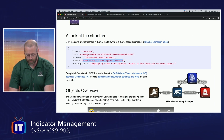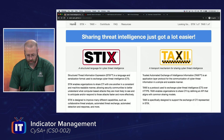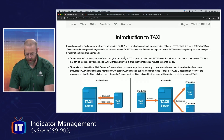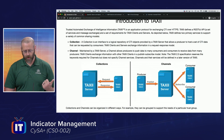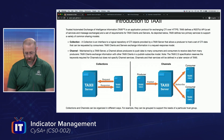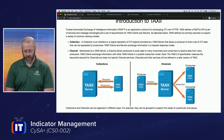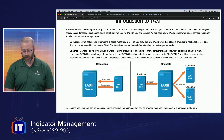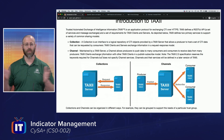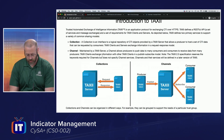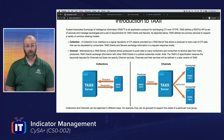Let's go back and hit the TAXII section. A collection is an interface to a logical repository of CTI objects provided by a TAXII server that allows a producer to host a set of CTI data that can be requested by consumers. A channel is maintained by a TAXII server, and a channel allows producers to push data to many consumers and consumers to receive data from many producers - a multiple-to-one kind of idea.